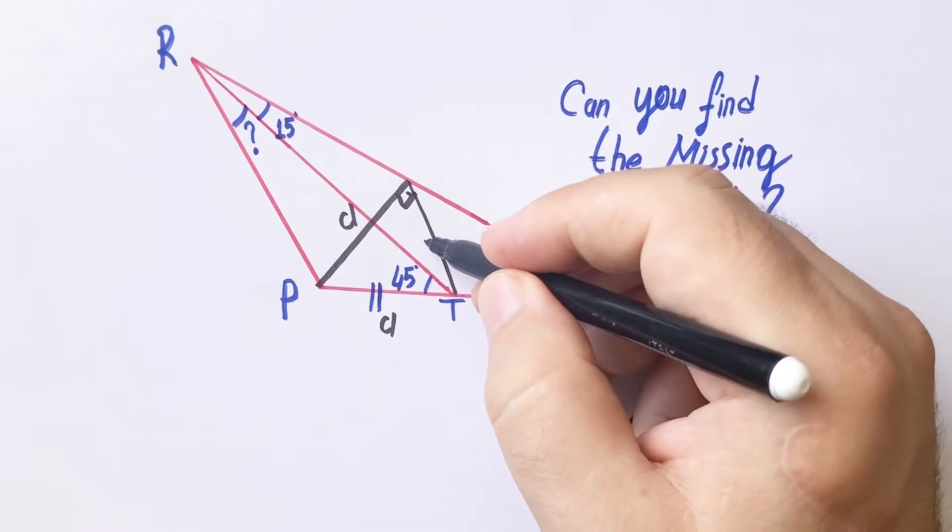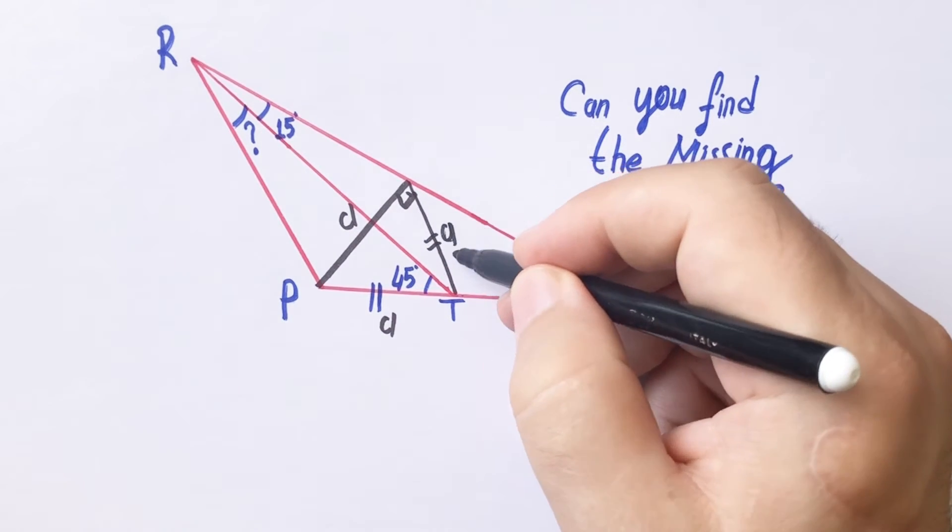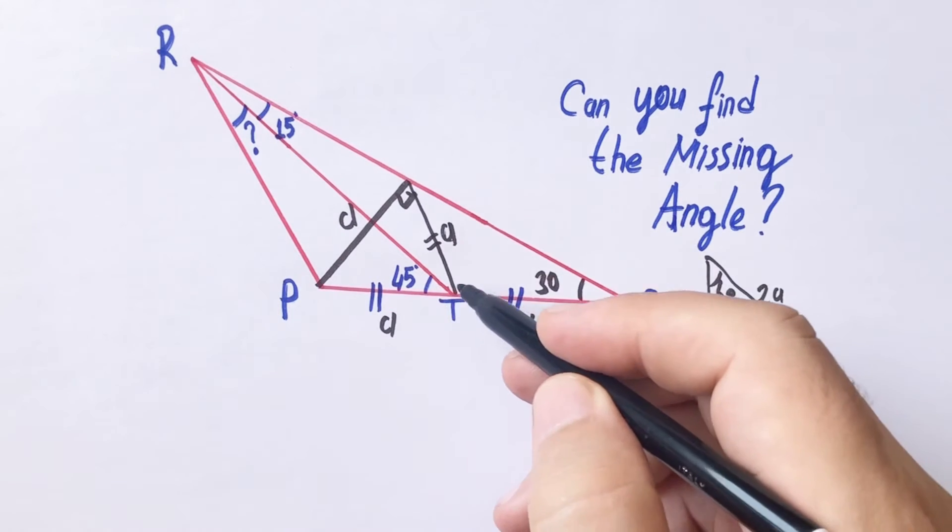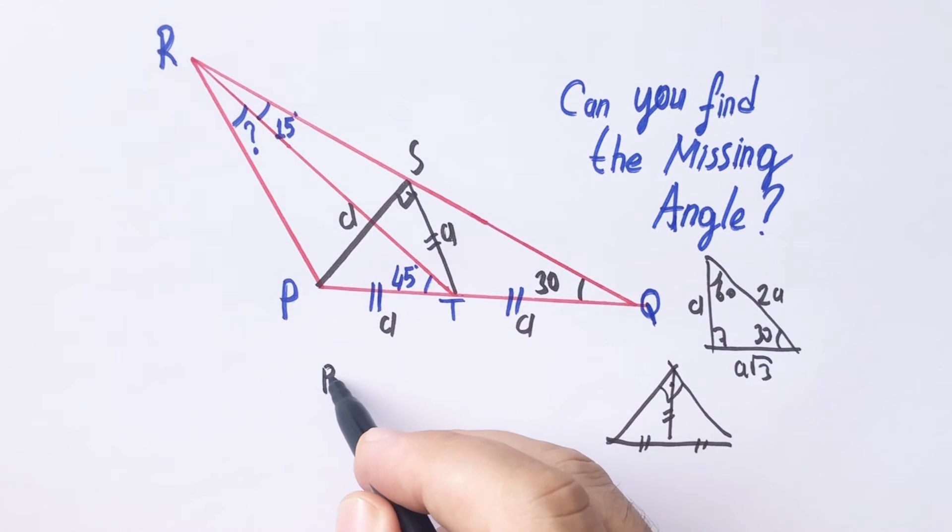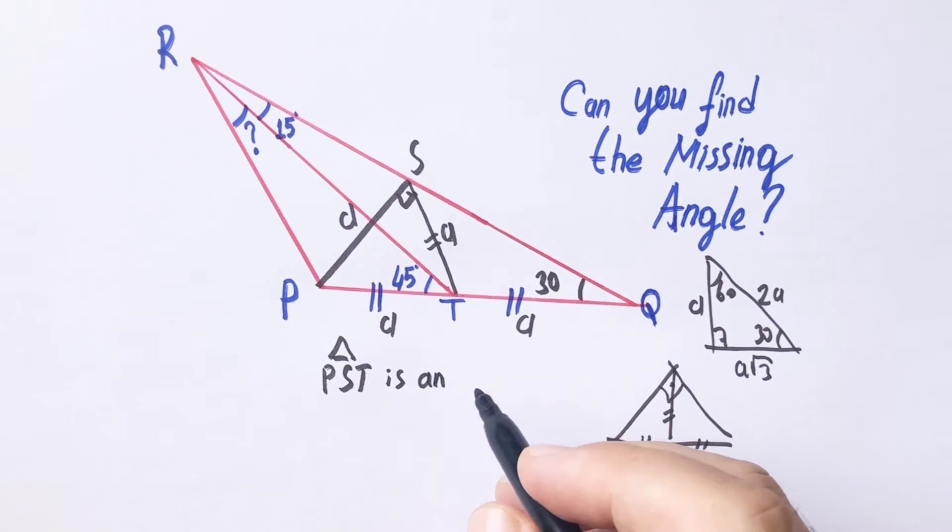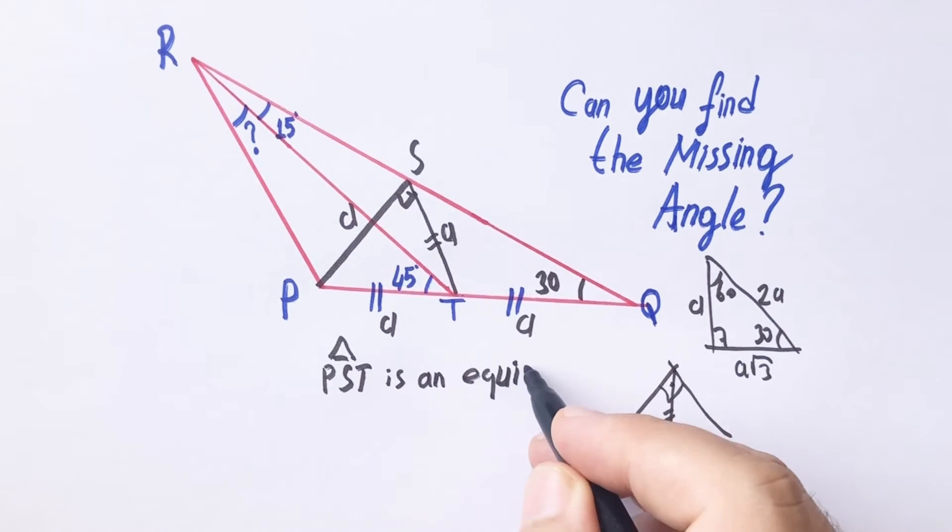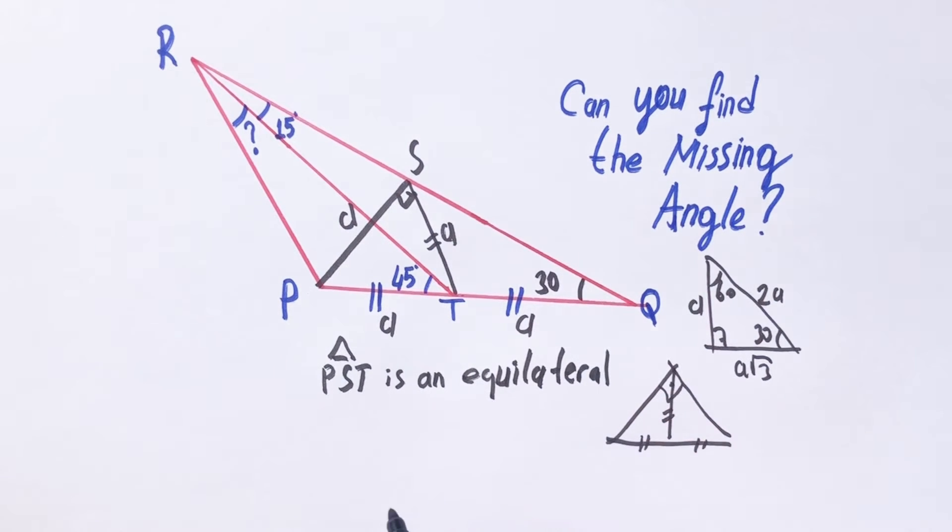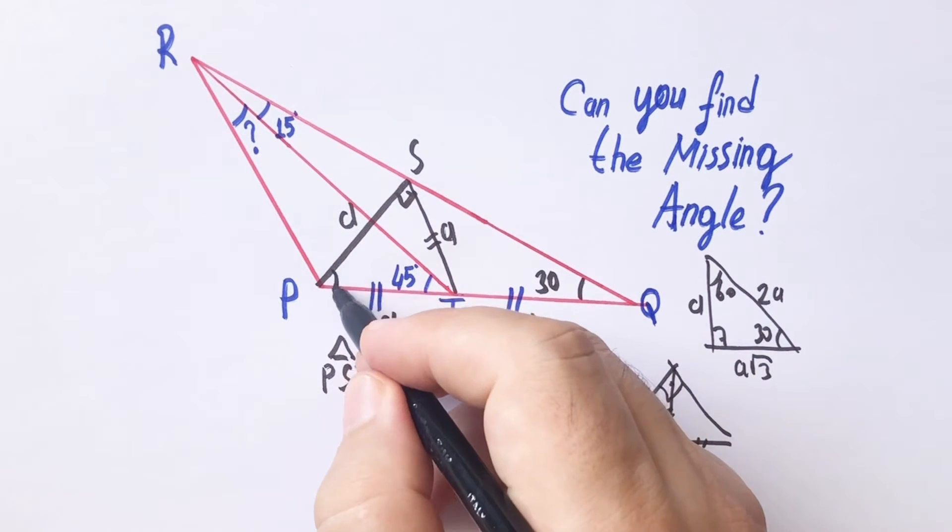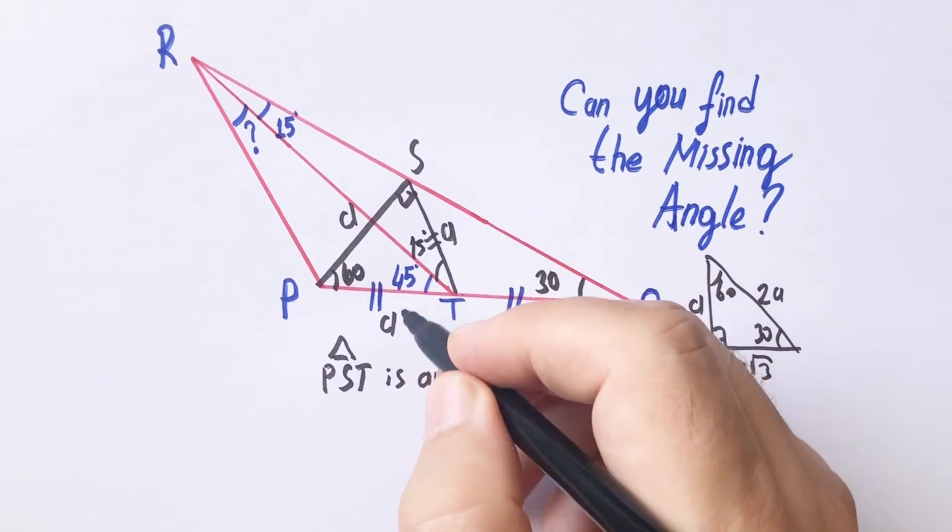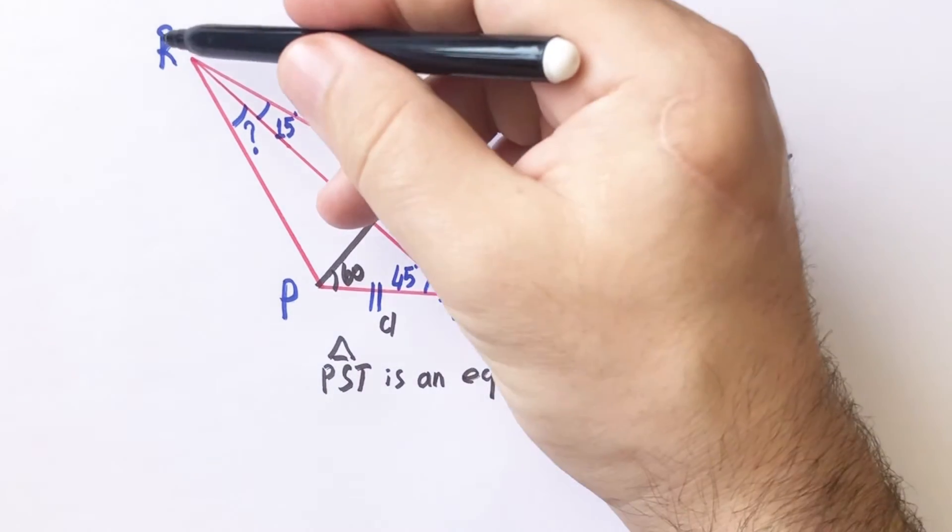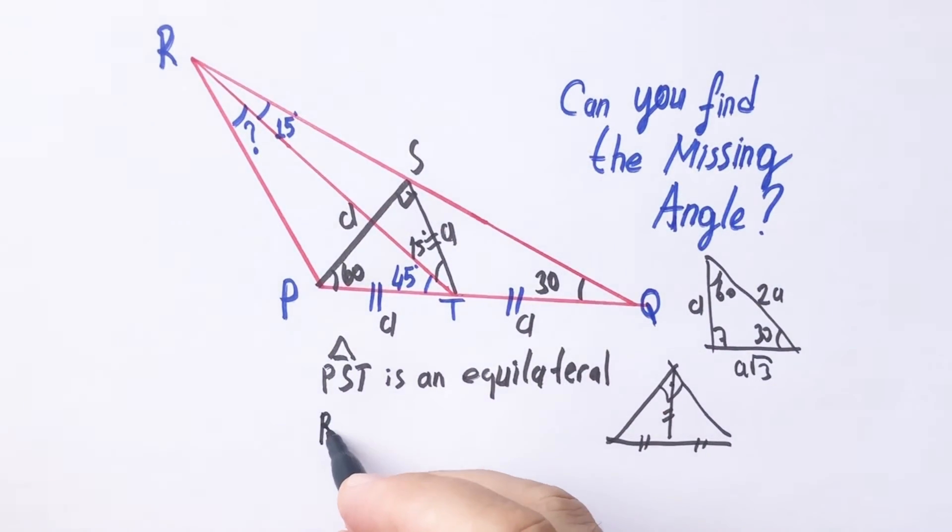If you notice that this triangle, let's call here S point, PST triangle is an equilateral triangle. Therefore here will be 60 degrees. And left here, if you focus on RST triangle, RST triangle, the base angles are equal so this is an isosceles triangle.